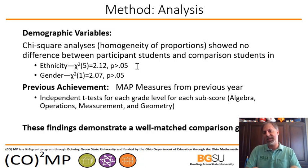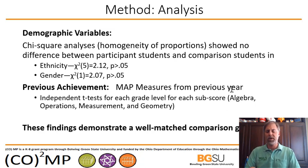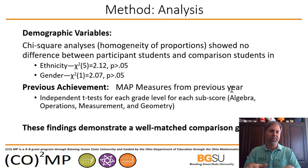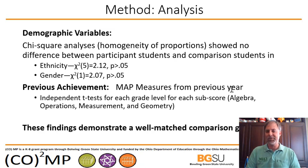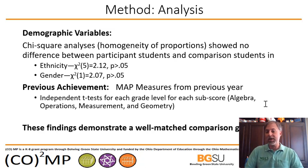Previous achievement is another important factor. If the lesson study group students had previously achieved much higher than the comparison group, you'd already be starting with unequal conditions. We did independent T-tests for each grade level and found the groups are not statistically different — the control group of students and the students of lesson study teachers are academically equivalent. These findings demonstrate a well-matched comparison group.